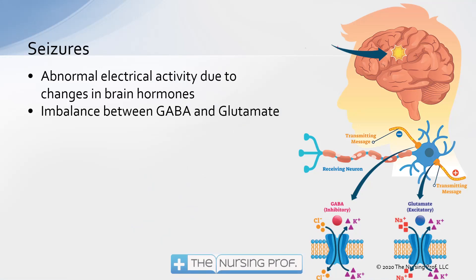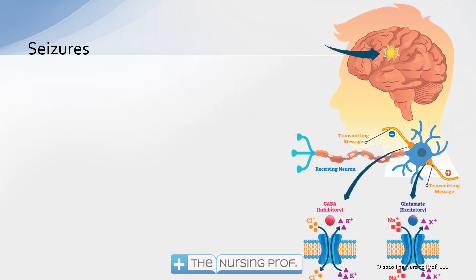Seizures are caused by having abnormal electrical activity occurring in the brain. What happens is that we have this imbalance occurring between two different pathways in the brain, resulting in an out-of-control electrical problem — kind of like an electrical storm happening in the brain.